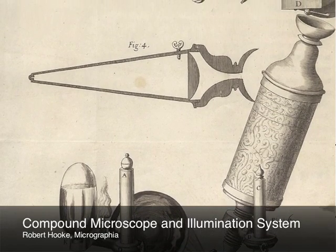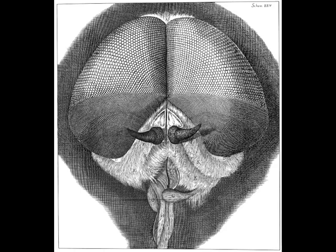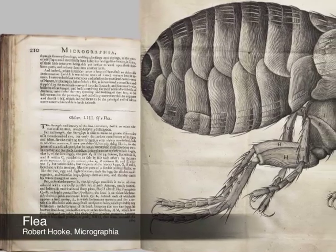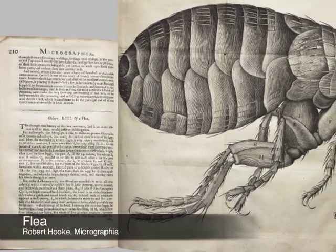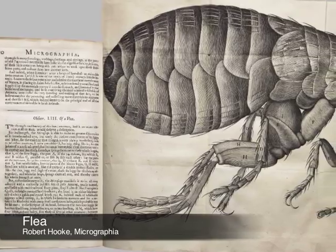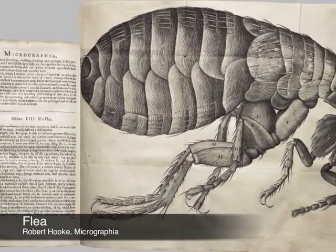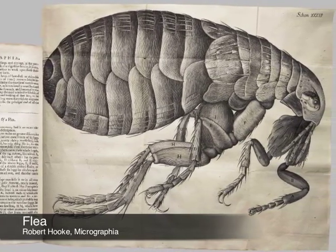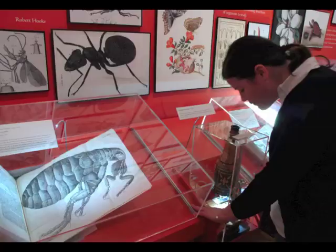Hooke began observing multiple organisms, including insects, sponges, bryozoans, foraminifera, and bird feathers. One of his more notable drawings included the flea, which Hooke described as adorned with a curiously polished suit of sable armor, neatly joined. The picture shown is what the fold-out looked like inside the book. Furthermore, the book was rather large, so the pictures that Hooke created were big, accurate, and detailed.